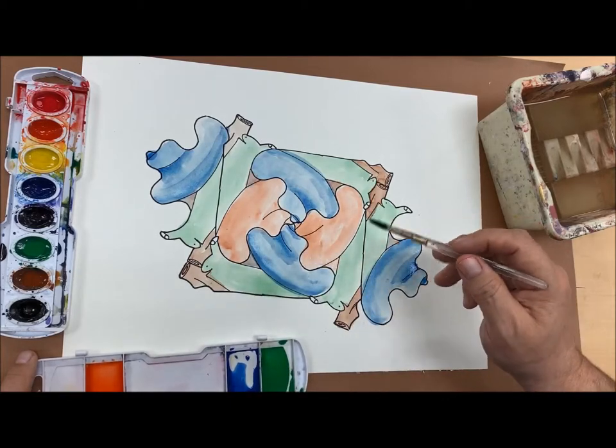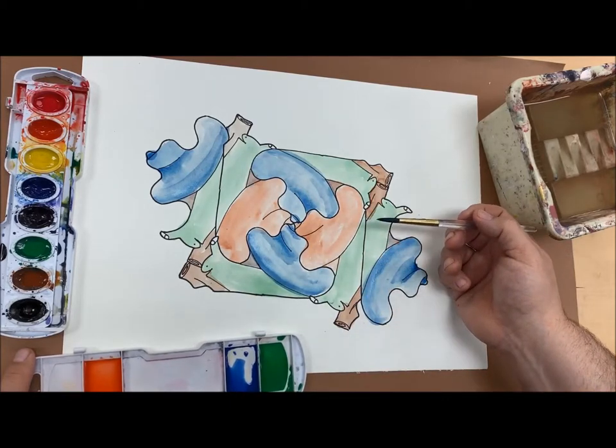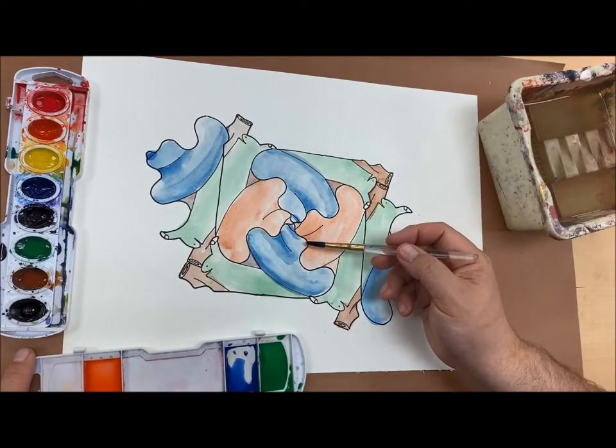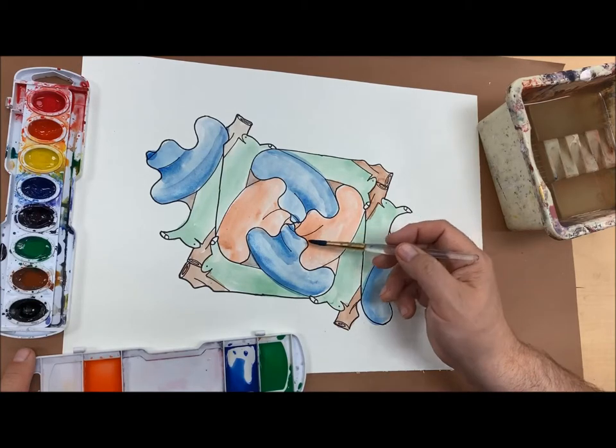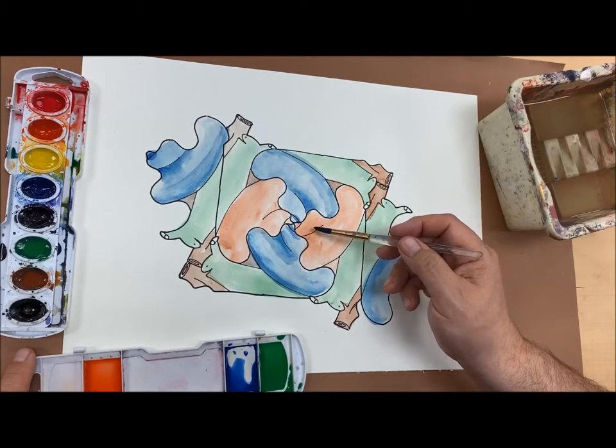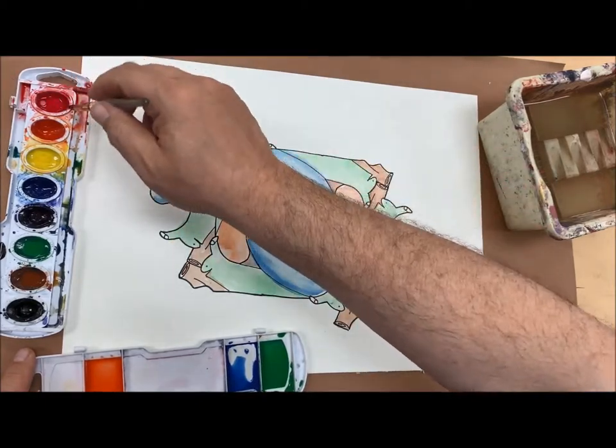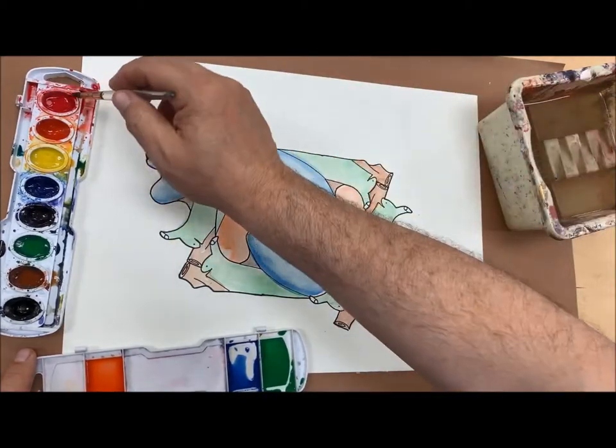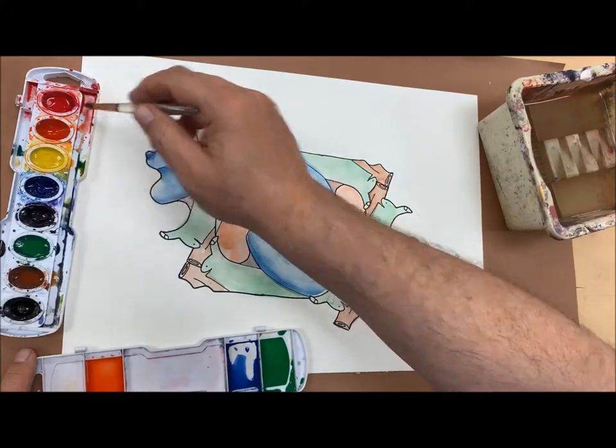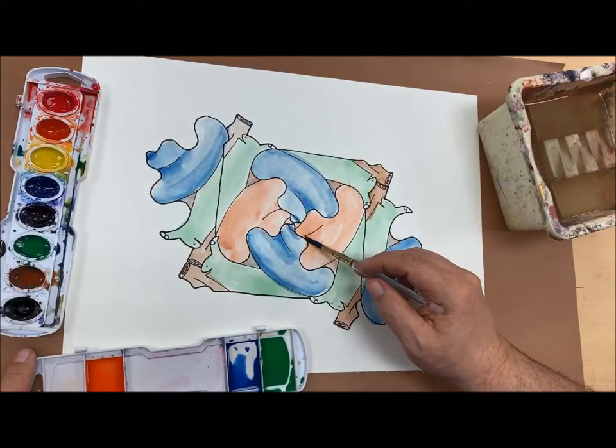So I could use brown as a shadow. Or I could use a neighboring color that's also warm. So I could go for red because the other neighbor of orange is yellow. It's too light, but red is a little bit more dark. So I think that's what I'm going to do. I'm going to add a little bit of red into the shadows of the shell on the orange side.